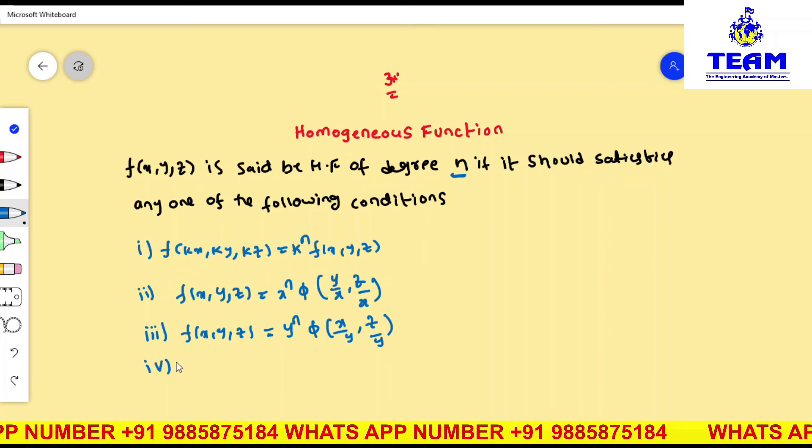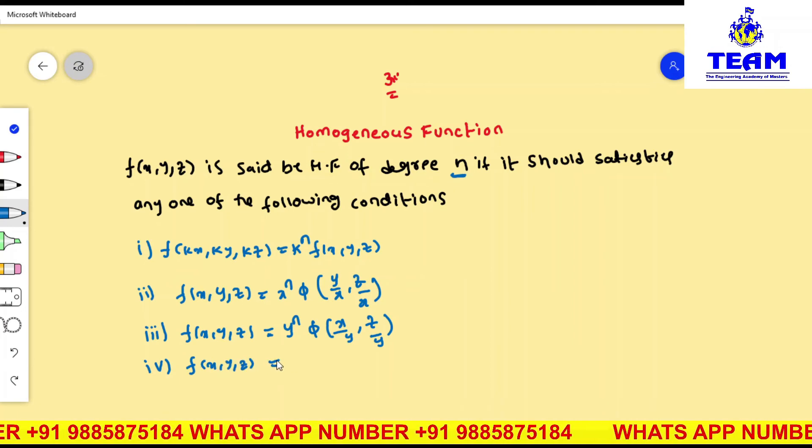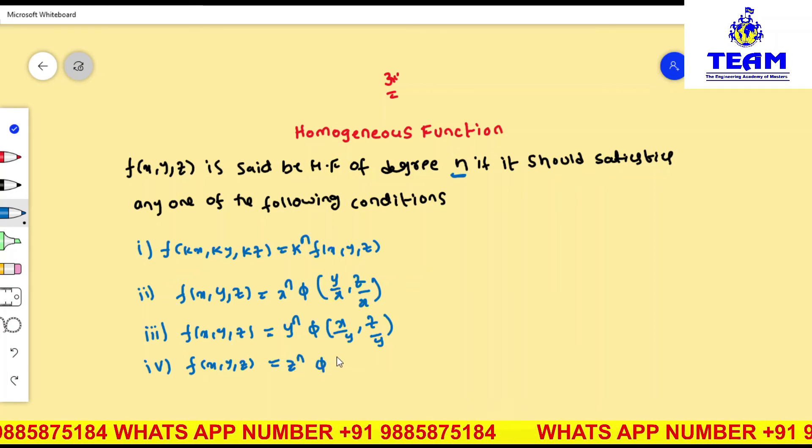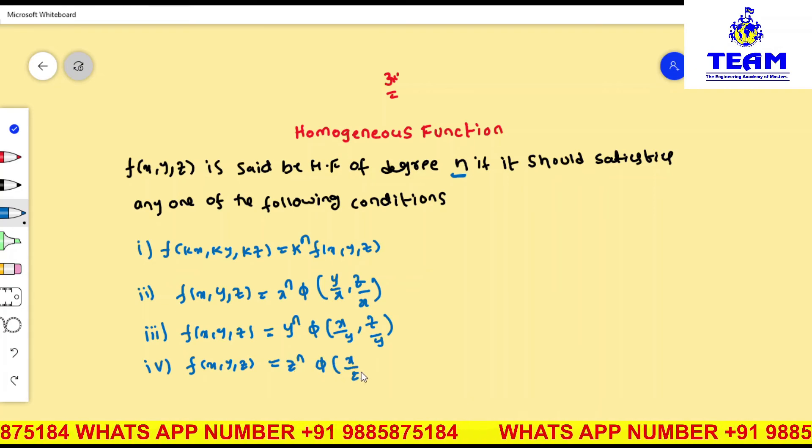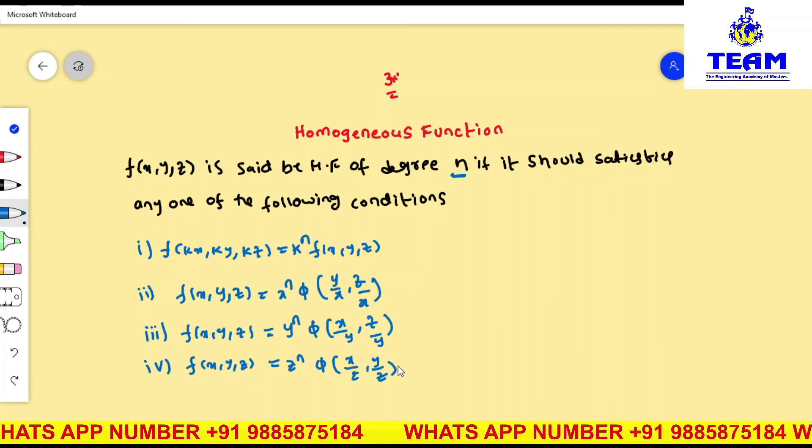Fourth form: given function f(x, y, z) is said to be homogeneous function. Here we are taking z is common, then z to the power of n into phi of x by z, y by z. Then you can say this function is homogeneous function of degree n.